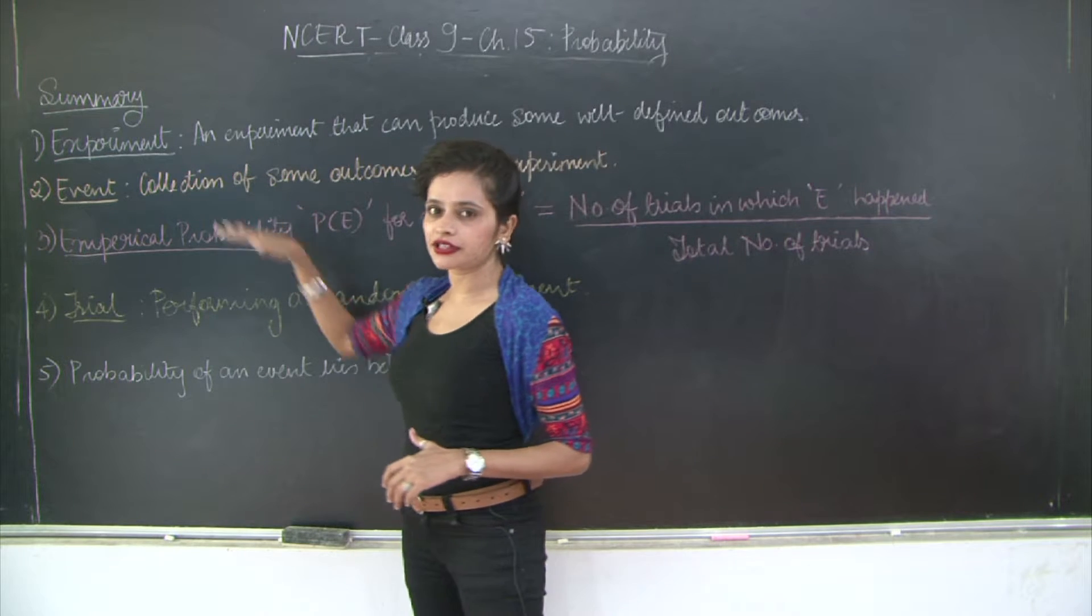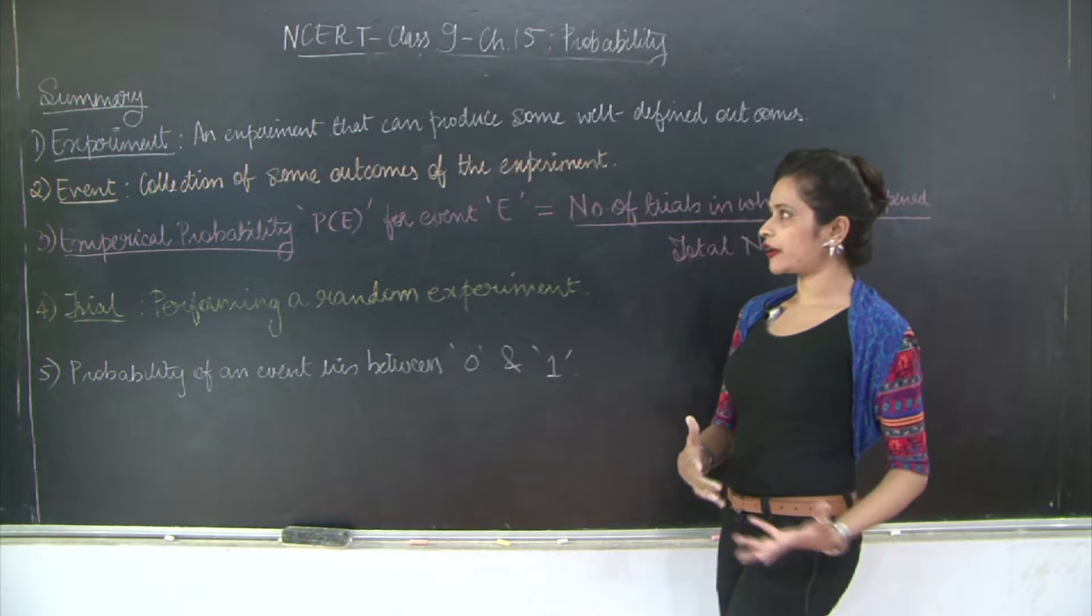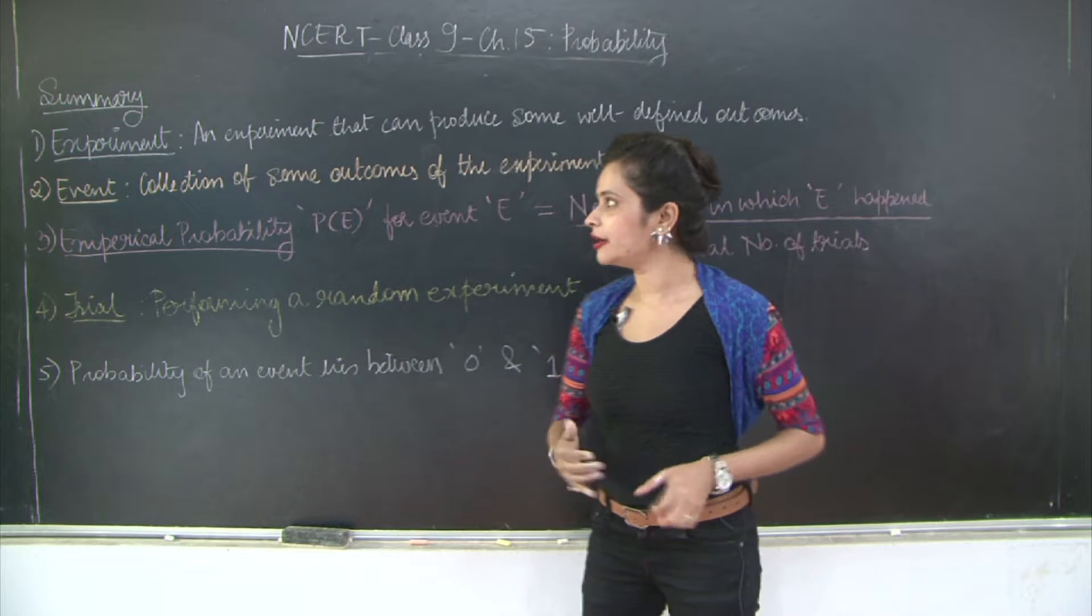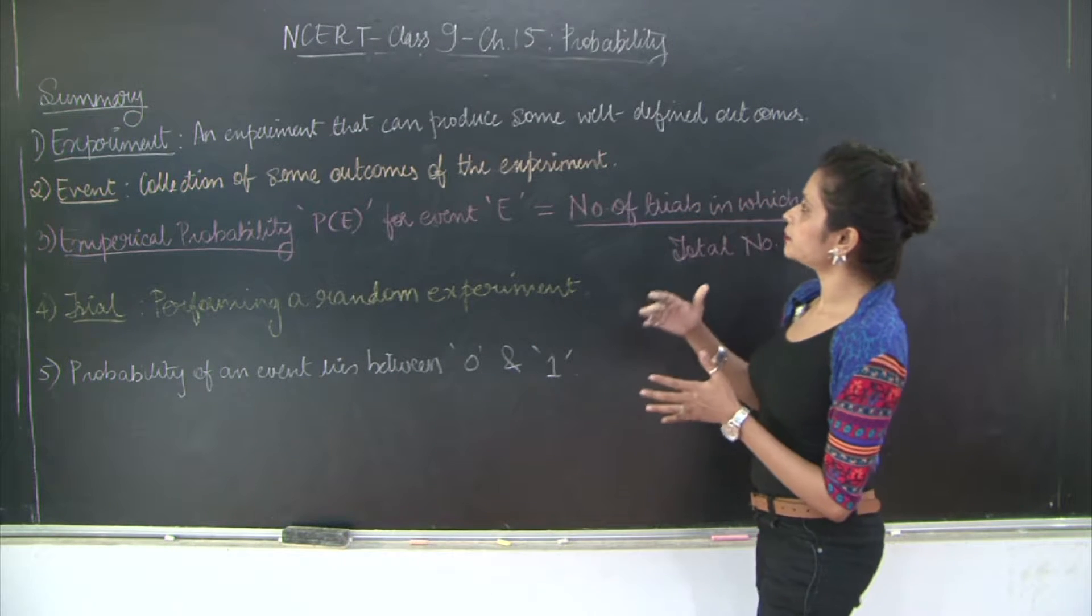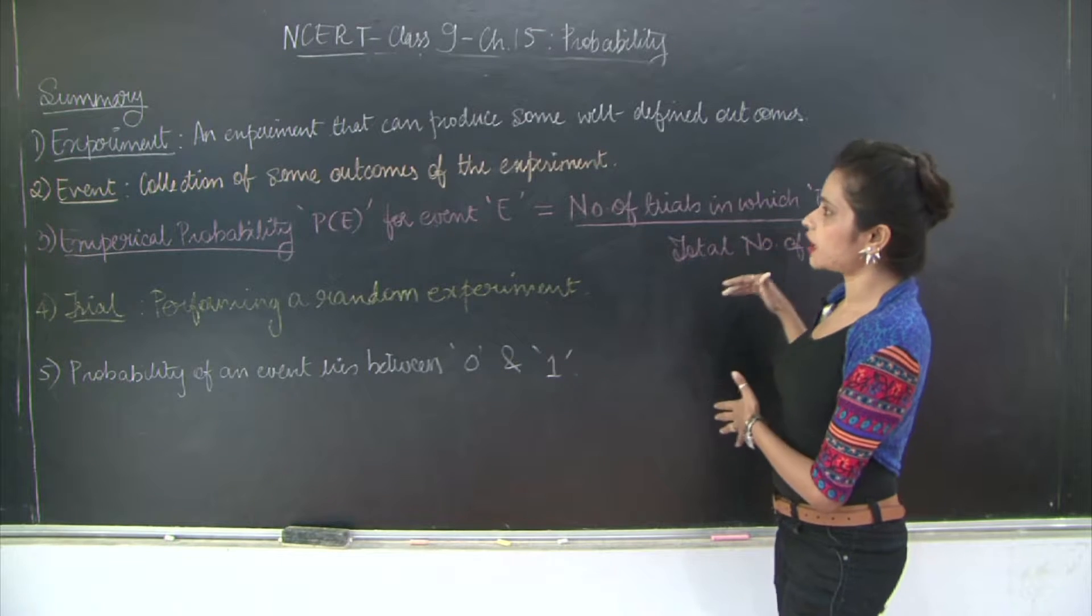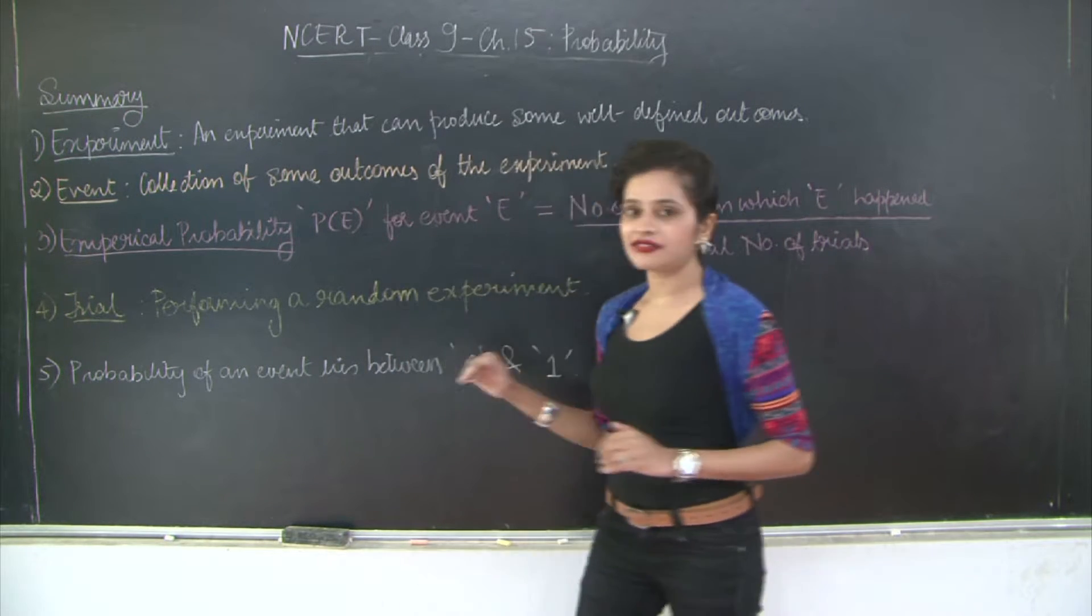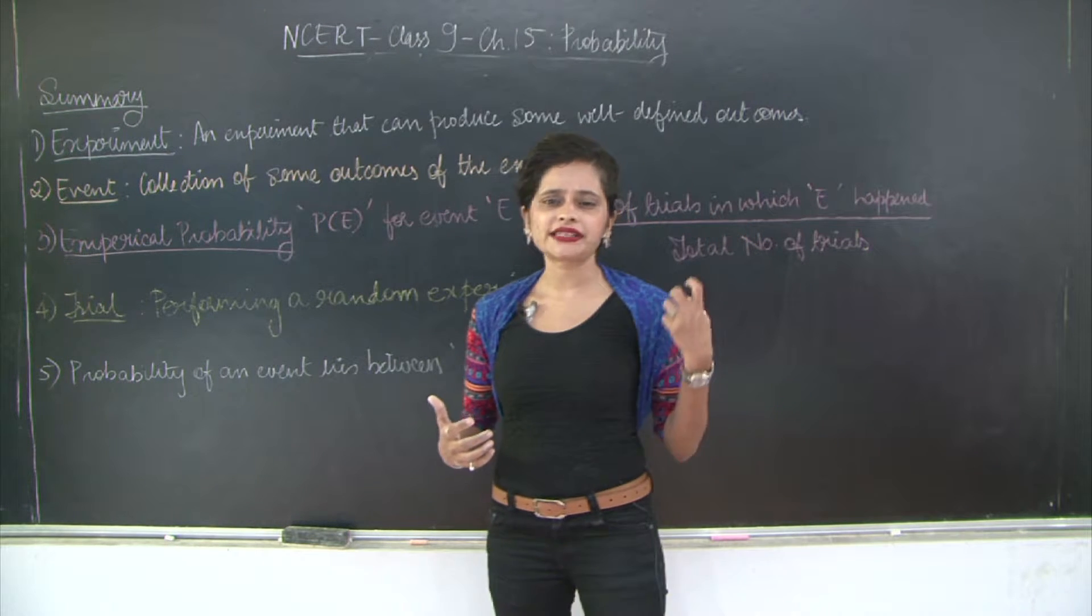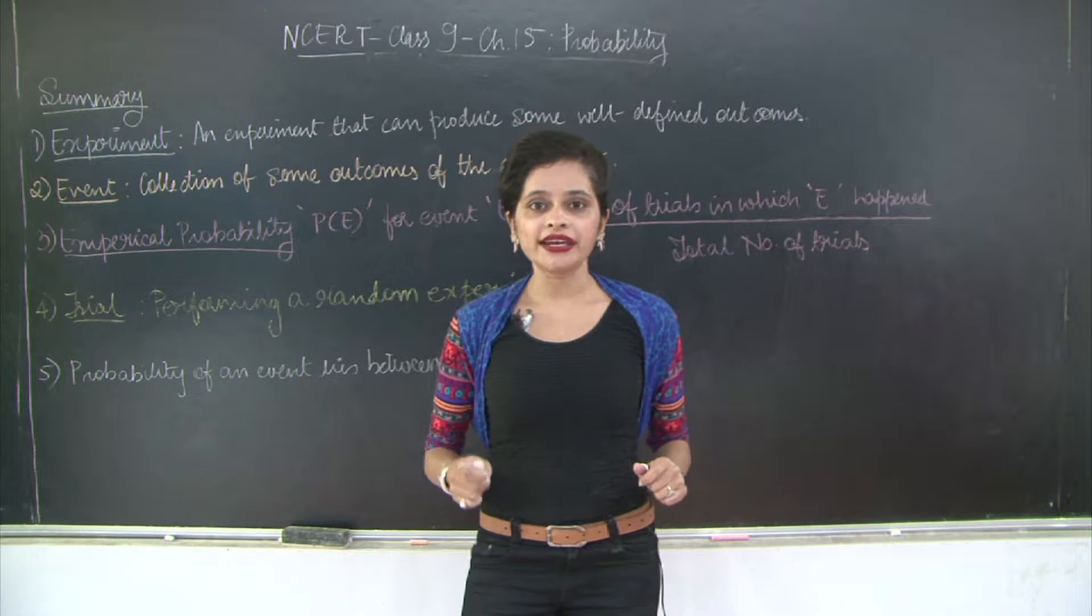So we learned different terms out here. The first one being experiment. So what exactly is an experiment? You must have performed various experiments in your science labs especially. But let's give a definition to it. An experiment that can produce some well-defined outcomes. So if you perform anything that is giving you well-defined outcomes. In probability especially we take the example of a coin. That's the best example I can give you. Why?